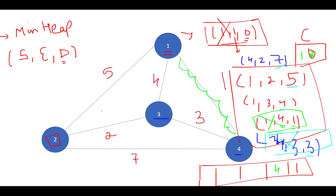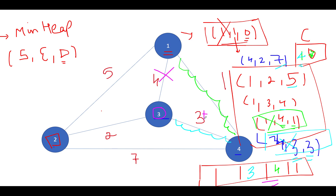Now let's check node three's connections. Three is connected to one — one is already visited, so we skip it. Three is connected to four by distance three — four is already visited, so we skip it. Skipping already-visited nodes helps us avoid looping conditions.